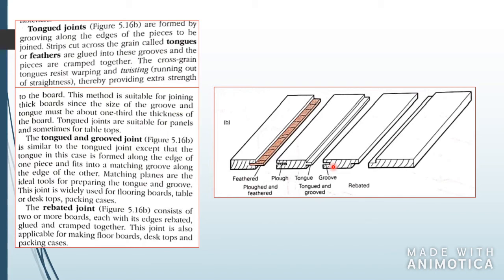This is a rebated joint, which is very strong, though not as strong as the tongued joint. Here's a tongue and groove joint where you have a piece in between called the tongue, and you fit the tongue into the groove. This keeps your piece from going up or down. You also have a feather joint.